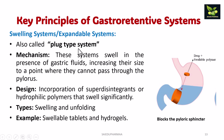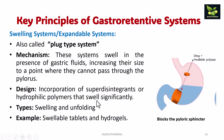Next is expandable or swelling systems, also called plug-type systems because they block the pyloric sphincter like a plug. The mechanism is that these systems swell in the presence of gastric fluid, increasing their size to a point where they cannot pass through the pylorus. Incorporation of super-disintegrants or hydrophilic polymers are used that swell significantly. They are of two types: swelling and unfolding. Examples include swellable tablets and hydrogels.